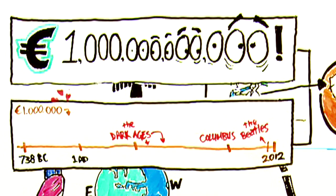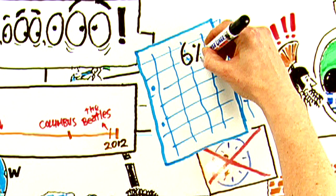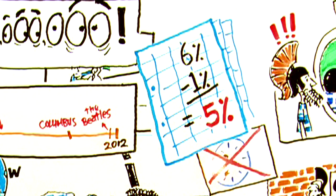The bust banks borrow this at 1%, they lend it to the government at 6%. The difference, which is 5%, is huge profit for the banks. But who pays it? You do.